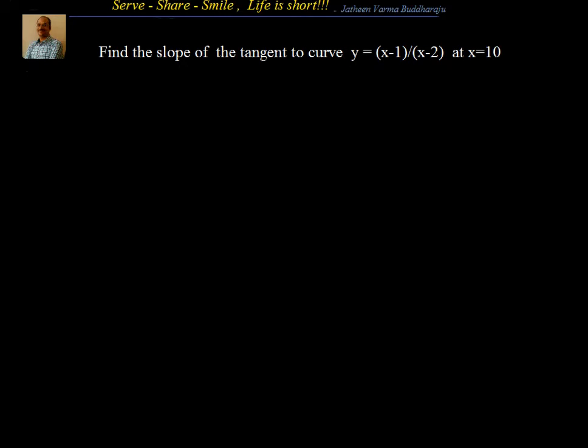Hello friends, welcome back. In this session let's look at a couple of examples related to application of derivatives where we are looking into examples. Derivative is nothing but the slope of a tangent to the curve at a particular point. We are doing all these examples based on the fact that slope is equal to derivative, and derivative is the slope of the tangent to a curve. So let's look at this simple example.